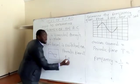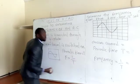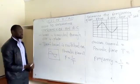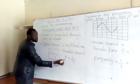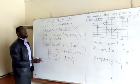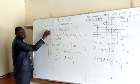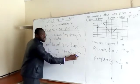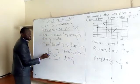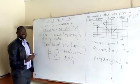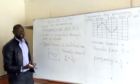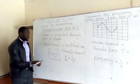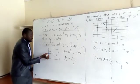Remember, the time base is set in time per division. Therefore we only need to calculate how many divisions have been covered by this one wave. If we know the time for one division, we'll know the time taken to complete one wave.